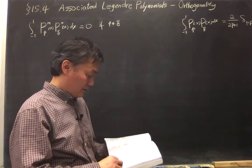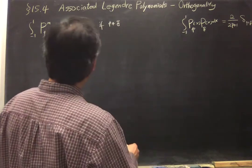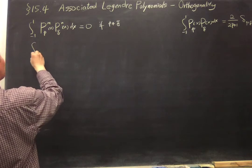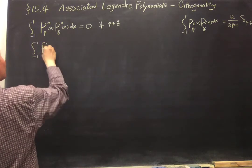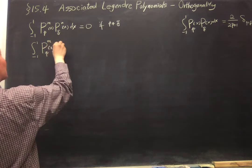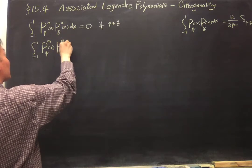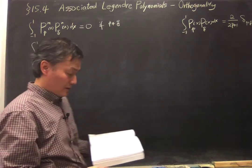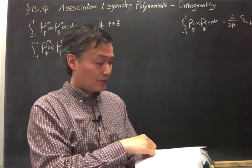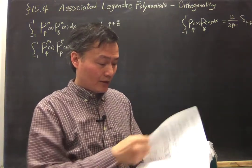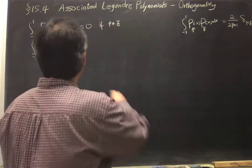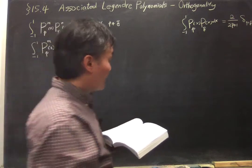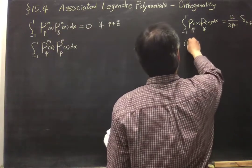I'll actually use another way to get to the result. We are considering this situation: integral from minus 1 to 1 of P_p^m of x squared dx. I'm going to consider this one, which is the square of this function. To do that, I'll use the relationship between P_l^m and P_l^(-m). That relation is in equation 15.81.